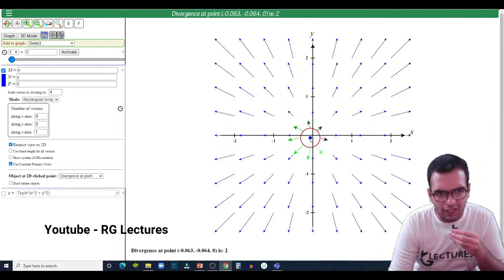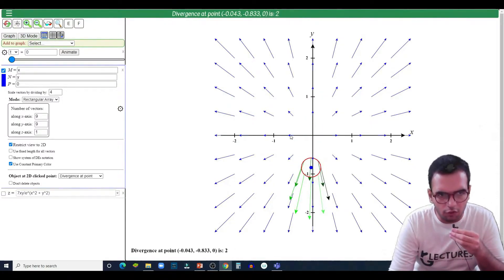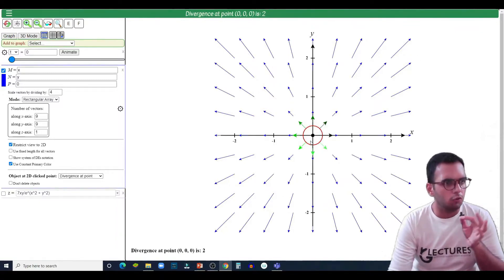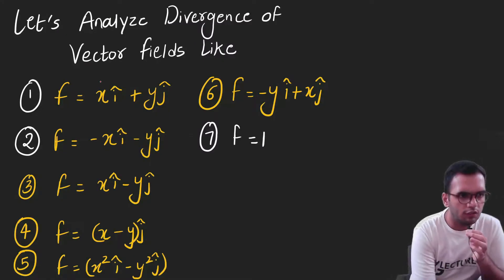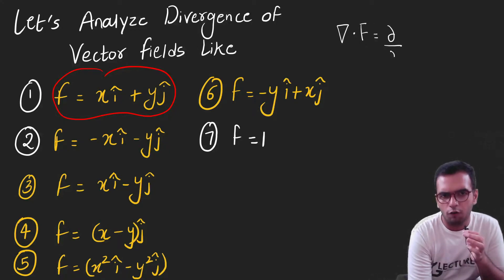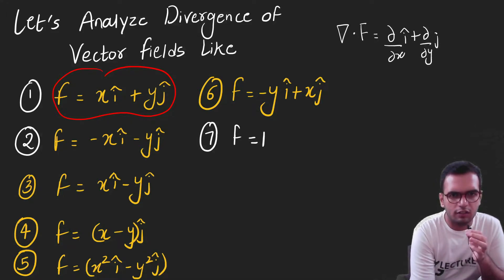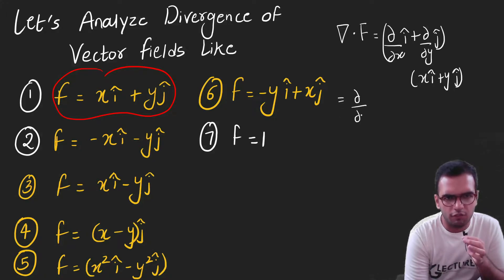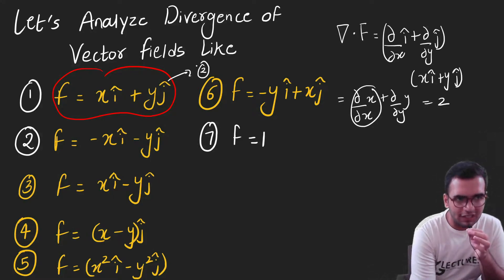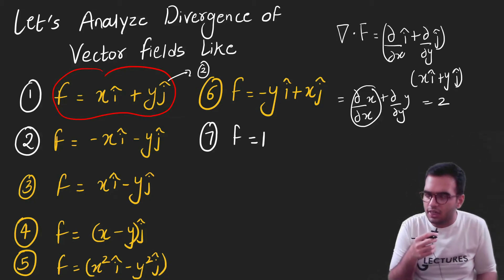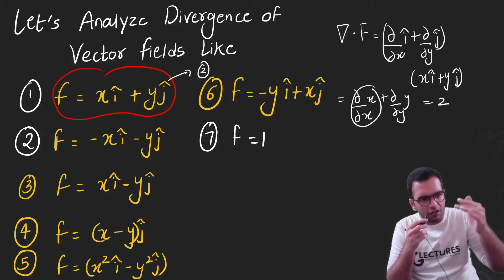Even at this point you can see the field spreading out in all directions. The equation of this vector field is x î + y ĵ. Let us calculate its divergence — divergence is mathematically defined as the dot product of the del operator with the function. Taking that dot product: d/dx of x plus d/dy of y, which is 1 + 1 = 2. So this vector field has a positive divergence of two. We can see divergence through the vector field and also calculate it mathematically.